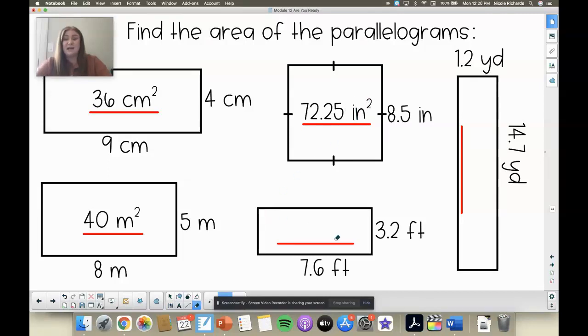And now come and try length times width on this rectangle down here. So 7.6 times 3.2. And then we can see 2 decimal places, so don't forget to move your decimal. So 24.32 feet squared.